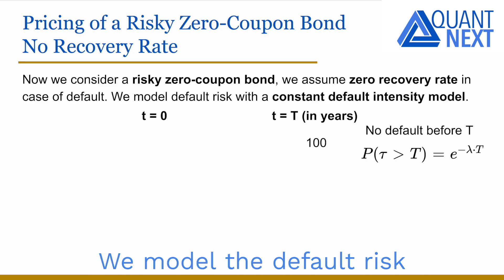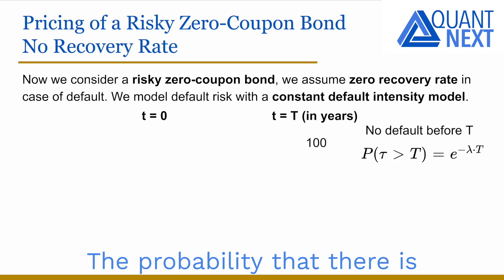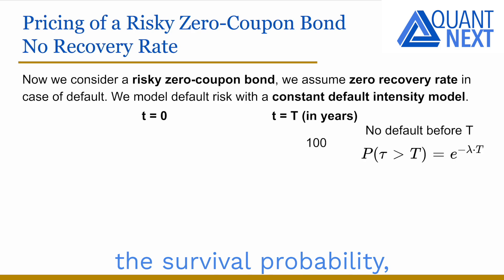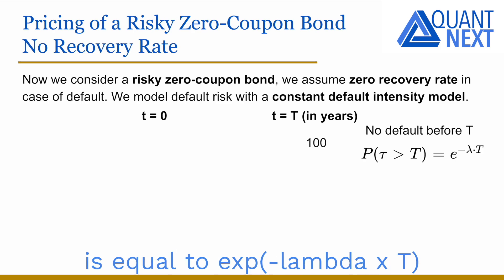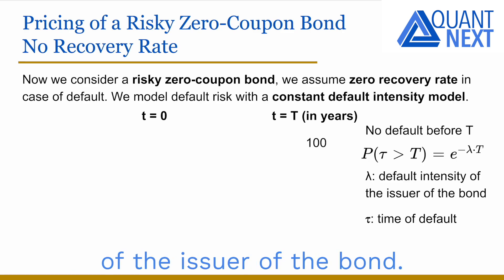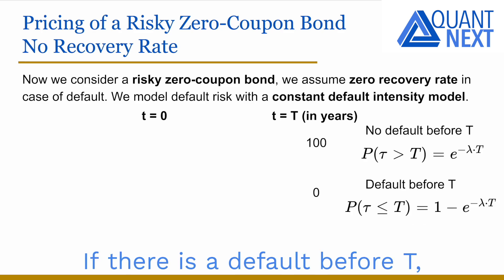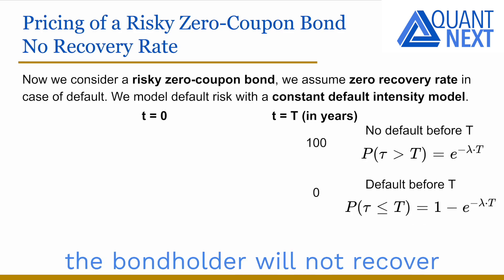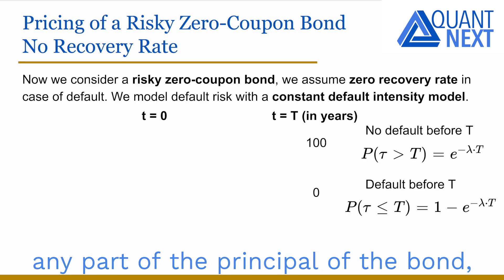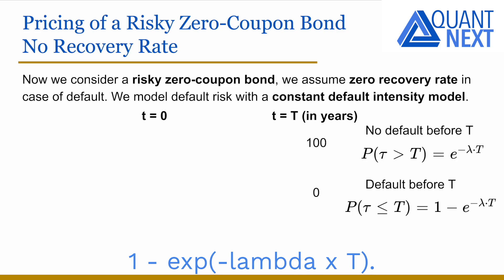We model the default risk with a constant default intensity model. The probability that there is no default before t — the survival probability — is equal to the exponential of minus lambda times t. Lambda is the default intensity of the issuer of the bond, and tau is the time of default. The probability that there is a default before t is 1 minus the exponential of minus lambda times t.